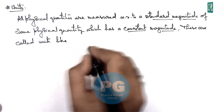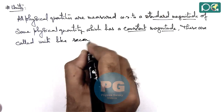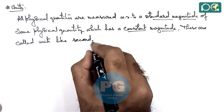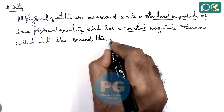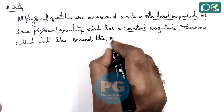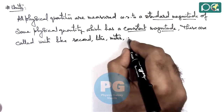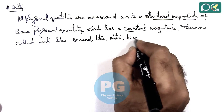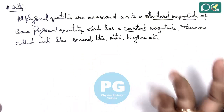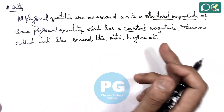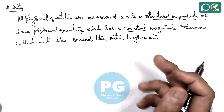For measurement of time we use the unit as second. For measurement of volume we use litre. We use measurement of length as metre. Similarly we use kilogram. There are many different quantities — force is measured in newton, work and energy are measured in joule.